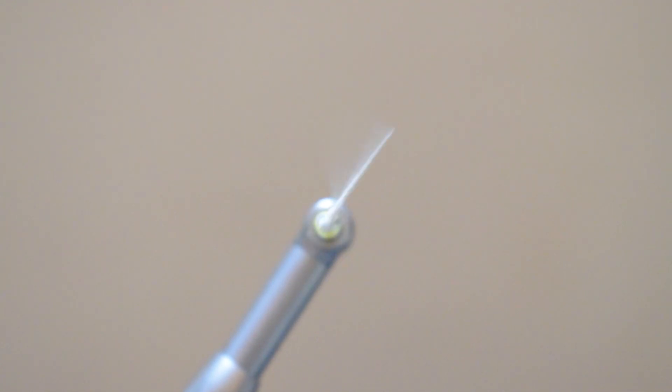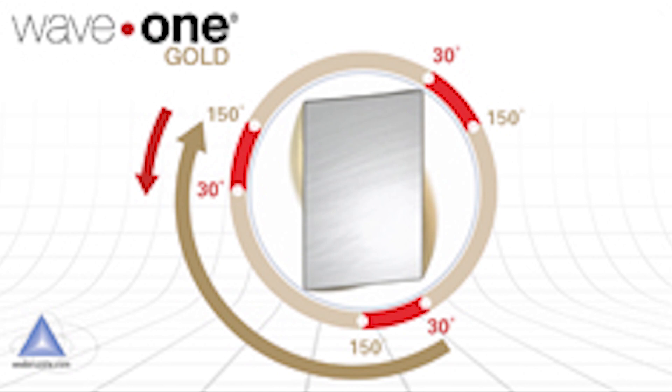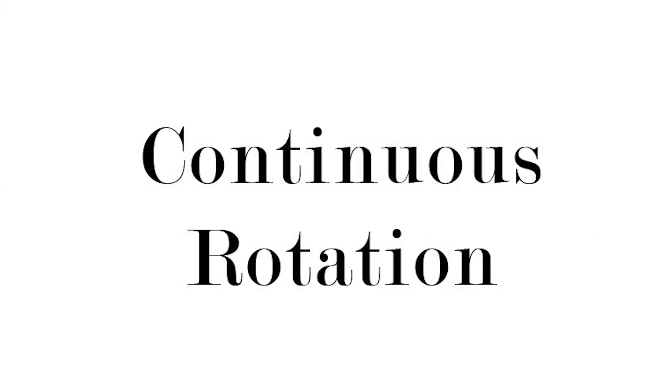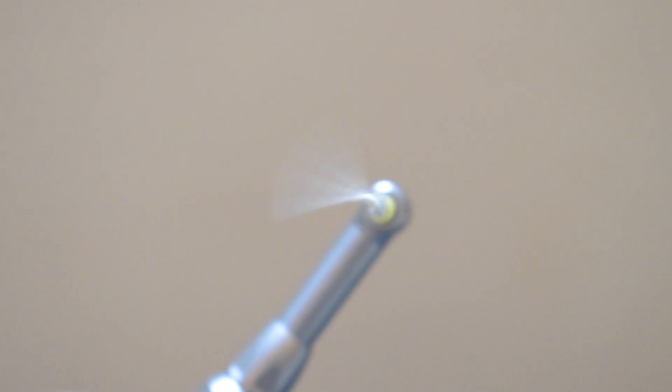As you can see in the first video, the file doesn't rotate a complete 360 degrees in one motion — it does multiple clockwise and anti-clockwise rotations depending on the mode selected. Many files like Wave One are meant to be run in reciprocation mode, and in those situations this motion is really helpful. In the continuous rotation video, as you can see, the file continuously rotates a full 360 degrees with no anti-clockwise rotation.